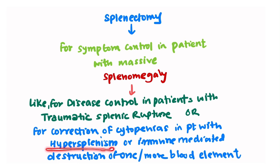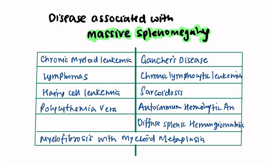In certain conditions splenectomy is done as a life-saving procedure, while in some conditions it is done to prevent the long-term effects of hypersplenism like cytopenias.